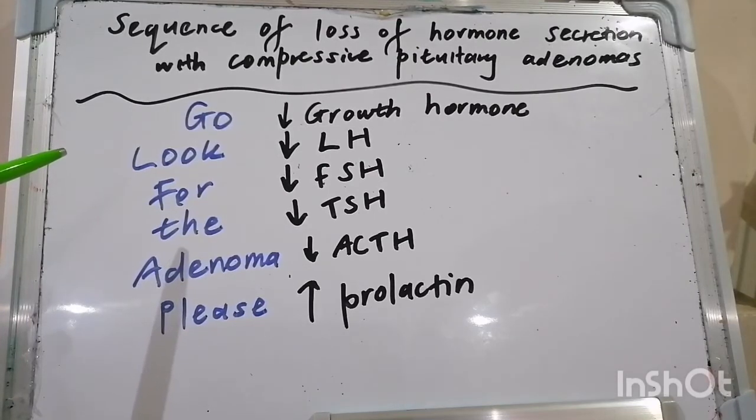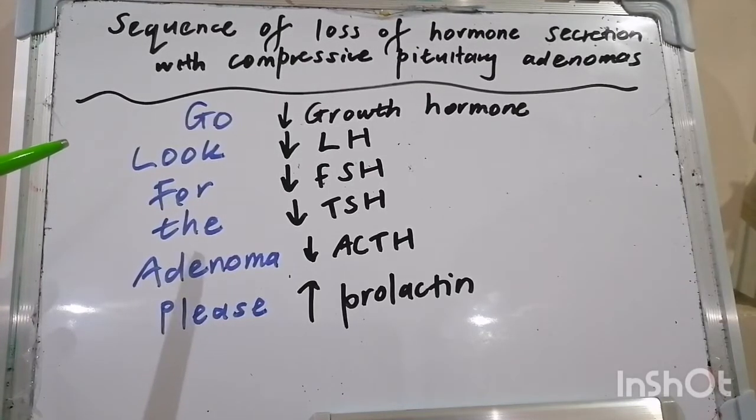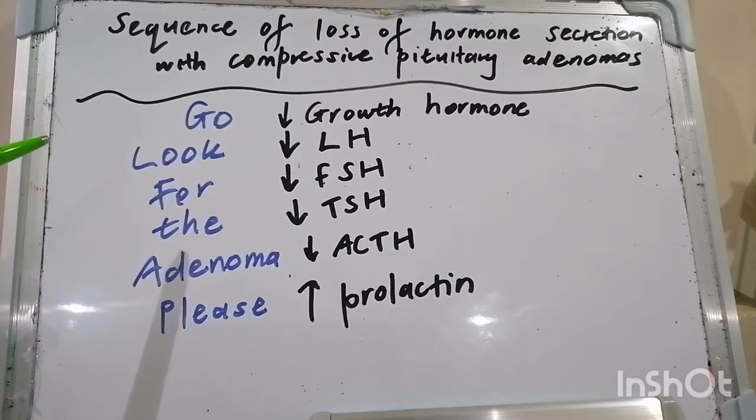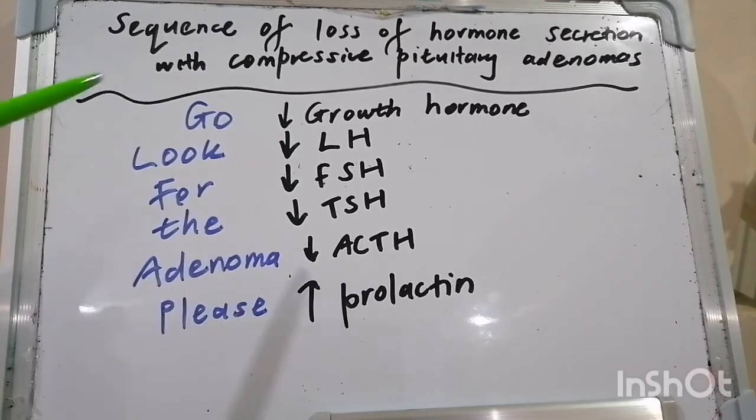Regarding gonadotropins — LH and FSH — deficiency leads to hypogonadism. If they are in excess, it is usually silent, sometimes with paradoxical hypogonadism.